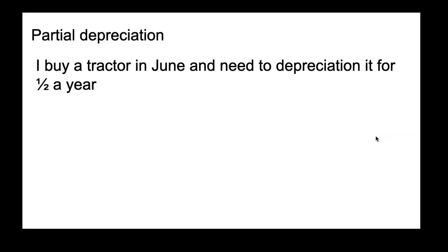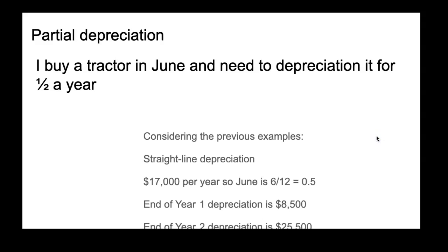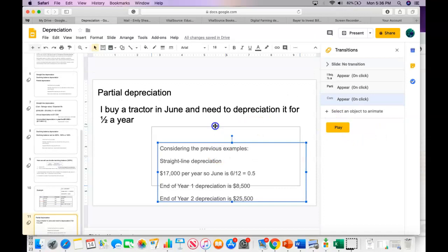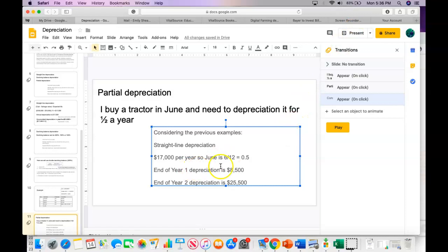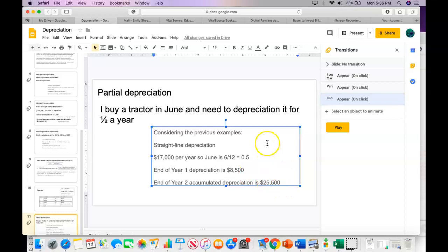Finally, partial year depreciation: if you buy a tractor in June, you depreciate it for only half the year. Using straight line at $17,000 per year, the first partial year is $8,500 (half a year). At the end of year two, the total accumulated depreciation would be $8,500 for the partial first year plus $17,000 for the full second year, equaling $25,500.